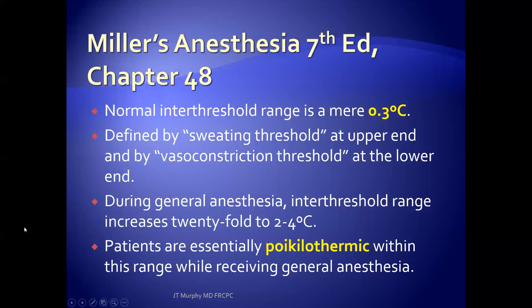The normal interthreshold range is a mere 0.3 degrees, defined by the sweating threshold at the upper end and by the vasoconstriction threshold at the lower end. However, under general anesthesia, the interthreshold range increases 20-fold, and patients are essentially poikilothermic within this range while receiving general anesthesia.